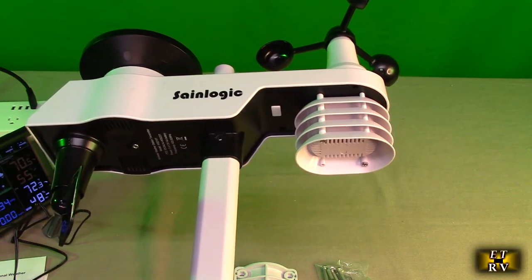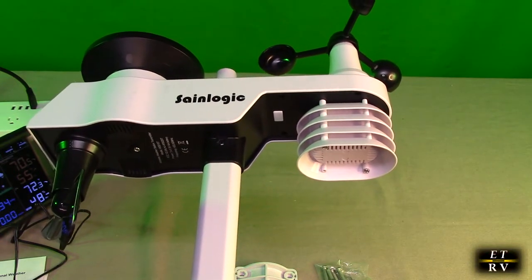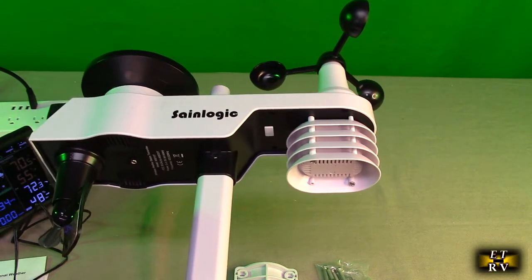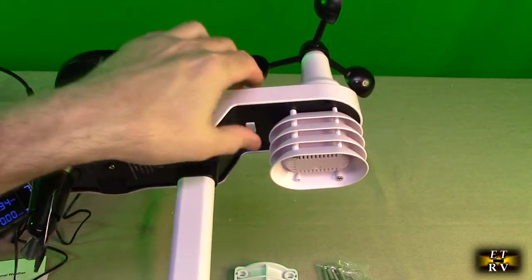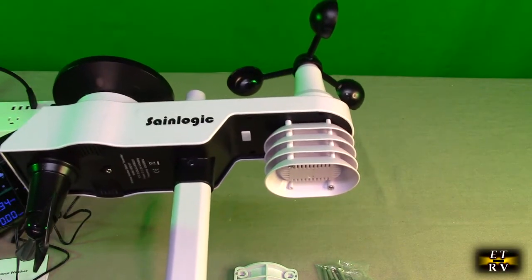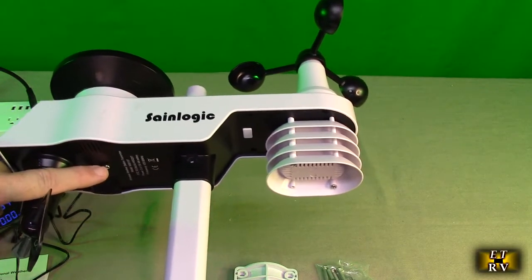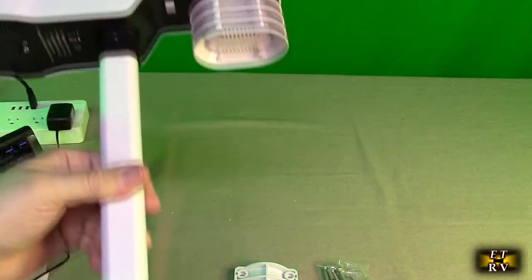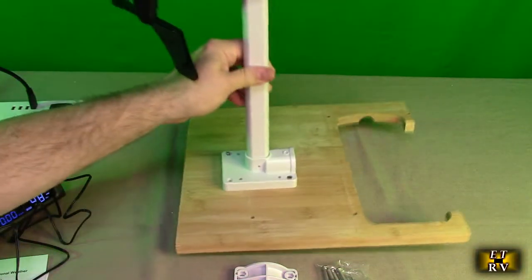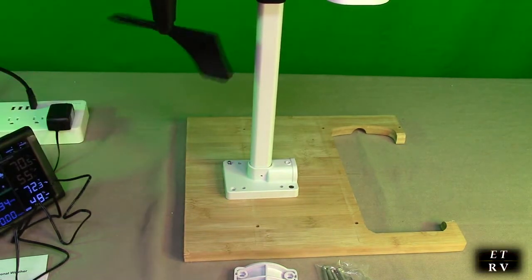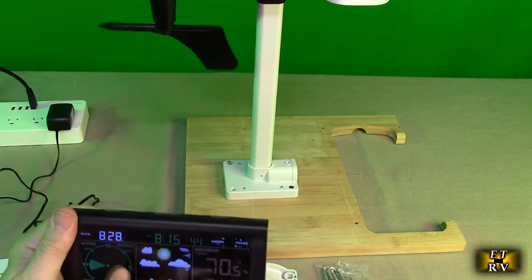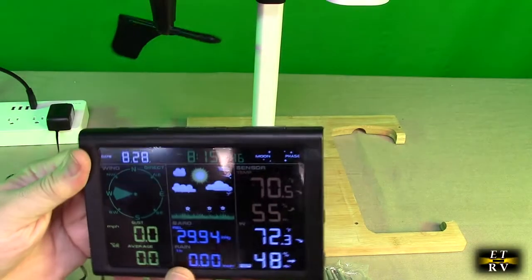And what that's saying is that it's transmitting data to the unit. Now, if you put batteries in there and that doesn't blink, just hold that reset button down for a couple of seconds and it will engage it. Here's the screw you remove and there's your three AA batteries in there. Very simple. Now when I first put batteries in there, it took a couple of minutes and then it started to collect the actual data.